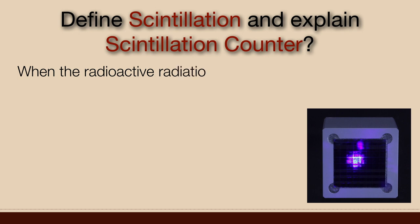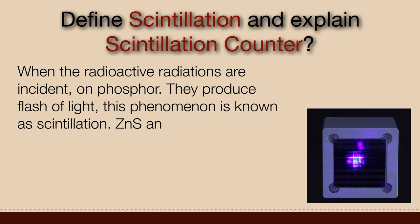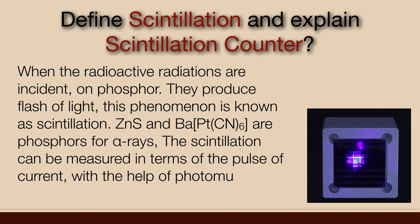When the radioactive radiations are incident on phosphor, they produce flash of light. This phenomenon is known as scintillation. Zinc sulphide and barium platinum cyanide are phosphors for alpha rays. The scintillation can be measured in terms of pulse of current with the help of photomultiplier tube and electrometer.